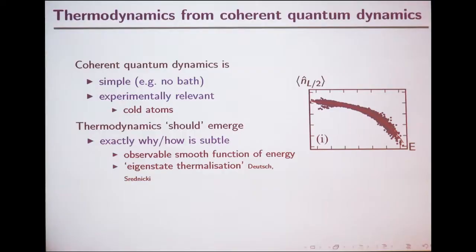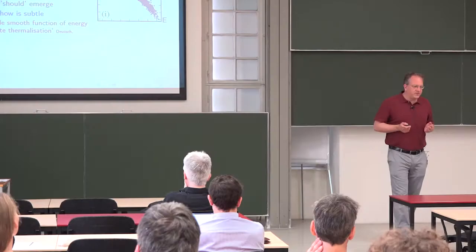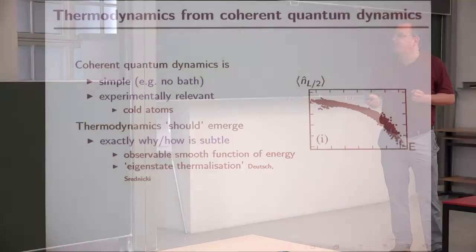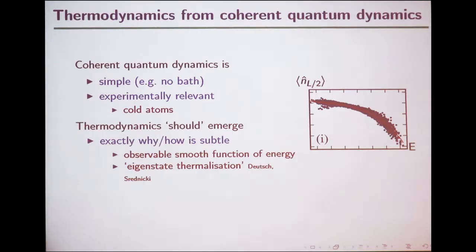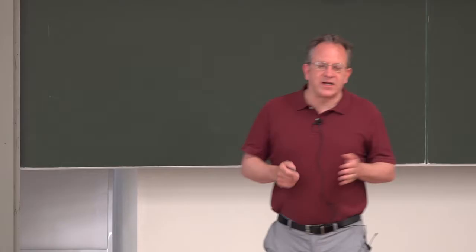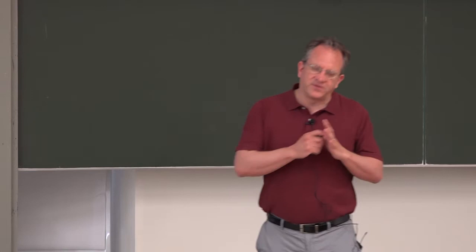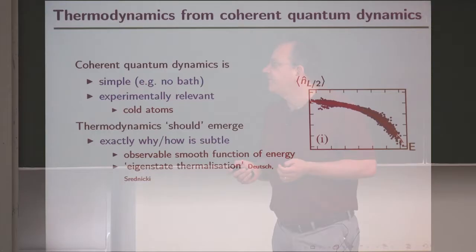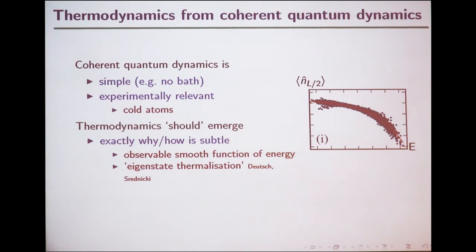The expectation is that thermodynamics should emerge at the end of the day, because it would be disappointing if we needed an entirely new theory for coherent quantum systems completely at odds with what we've seen so far. And it turns out thermodynamics more or less does emerge in a very large range of settings. Perhaps the clearest conceptual formulation is provided by the eigenstate thermalization hypothesis, which basically says that a physical macroscopic observable will be a smooth function of the eigenenergy of an eigenstate of your macroscopic quantum system.